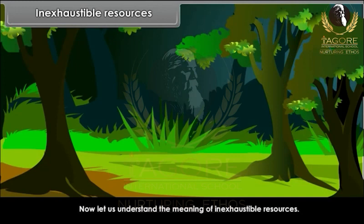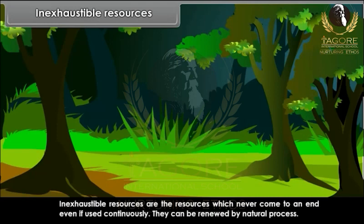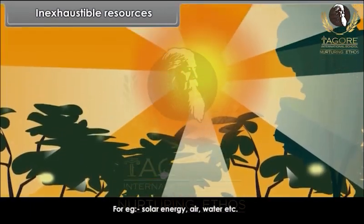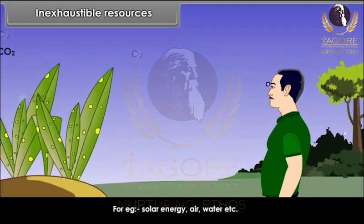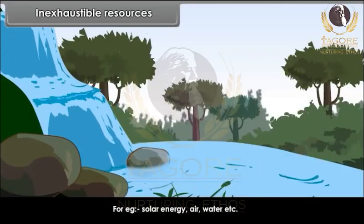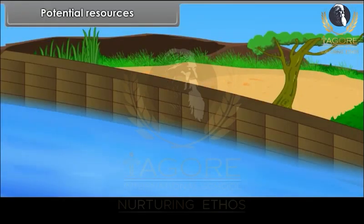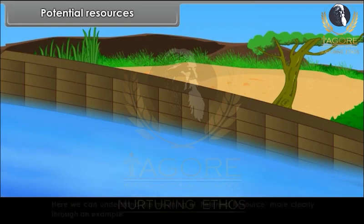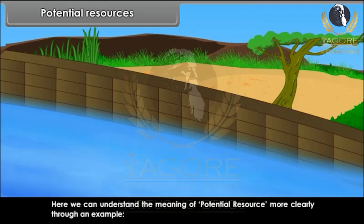Inexhaustible resources are the resources which never come to an end even if used continuously. They can be renewed by natural process. For example, solar energy, air, and water.